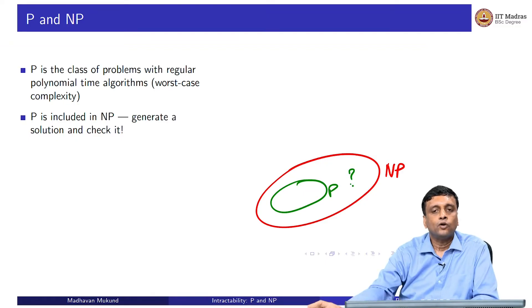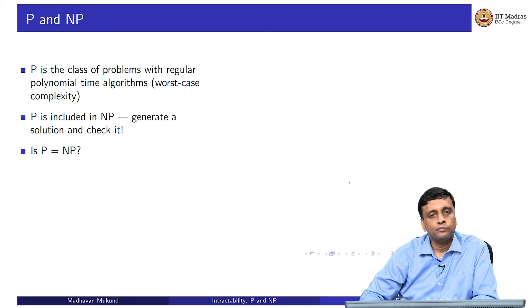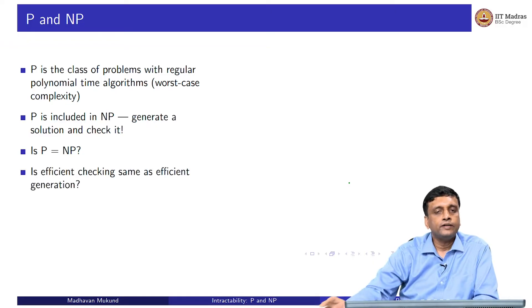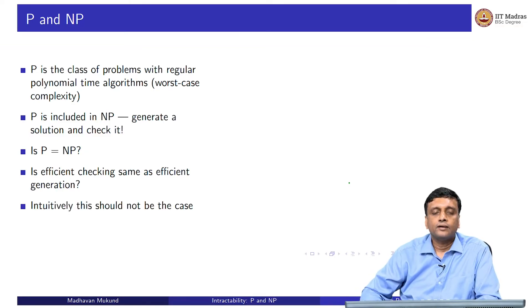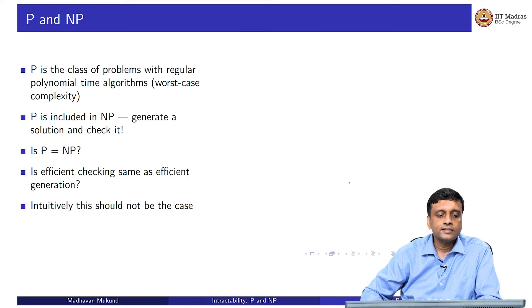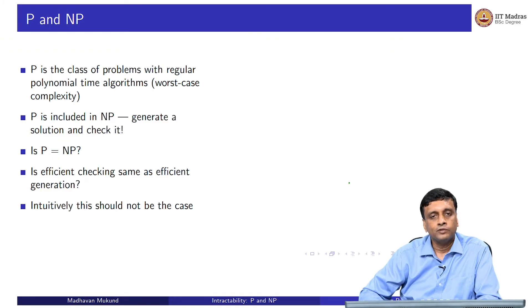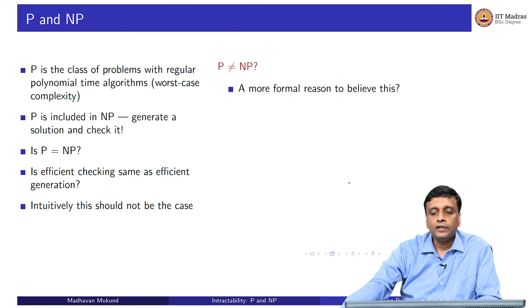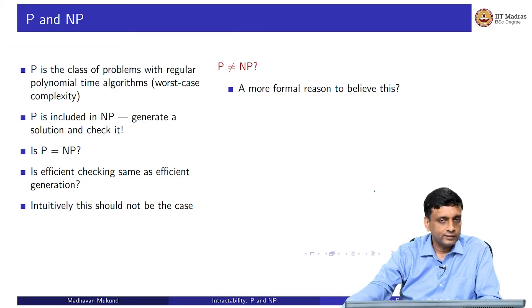The question is: are there things which are not in P but which are in NP? This is the question of whether the set P is actually equal to the set NP — does every problem with an efficient checking solution also have an efficient generation? Intuitively, like we saw from the teacher example, it should not be the case. It is intuitively harder to factorize a large number into two primes than it is to multiply those two numbers to validate the result. So we believe that checking is easier than generation, and this is the question of P versus NP. The general belief is that P is not equal to NP.